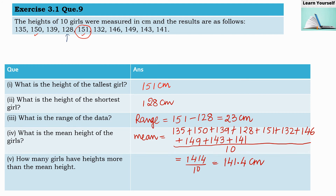The last question is: how many girls have a height more than the mean height of 141.4 centimeters? Going through each value — some are smaller, some are bigger. This one is bigger, this is bigger, this is bigger, this is bigger, and this one is smaller by 0.4. So 4 girls have a height greater than the mean height.